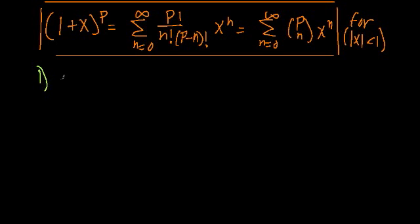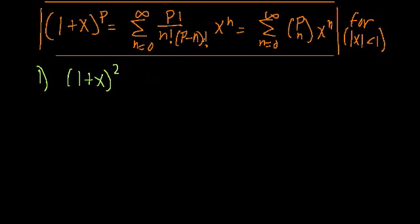So we're first going to start off with a basic example. We're going to look at 1 plus x squared, so p is just equal to 2. Now, you may be saying we can just factor this out and get an answer really quickly. And although that is true, I want to do it out in the series first so you can see how this infinite series truncates or ends when p is a positive integer.